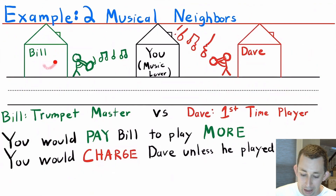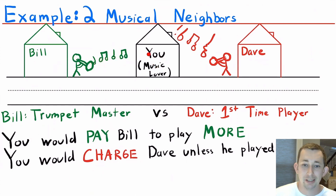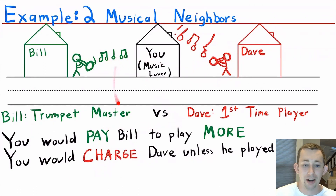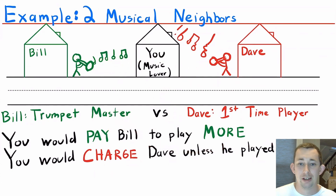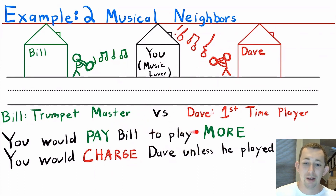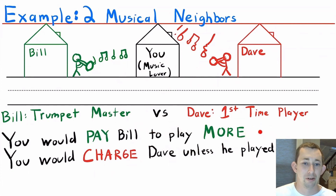Here's another example. You've got Bill and Dave who live next to you, and you like music. Bill is a trumpet master, and Dave is playing the trumpet for the first time. They're both playing at the same volume directly at your house. You would pay Bill to play his trumpet more, but you'd charge Dave to play less — telling Dave he needs to mow your grass or something because you really don't like his playing. You might slip Bill a $5 bill on his front porch and say 'could you play this afternoon?' So those are positive versus negative externalities, and how you might incentivize Bill and Dave to play more or less depending on your optimal level of music.